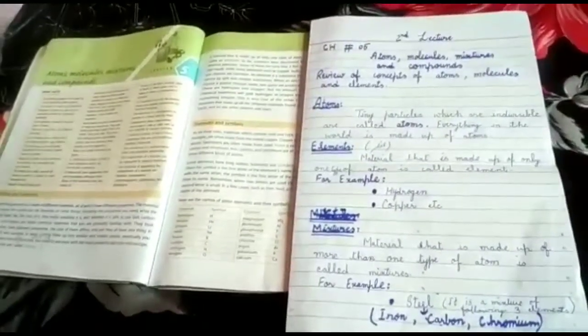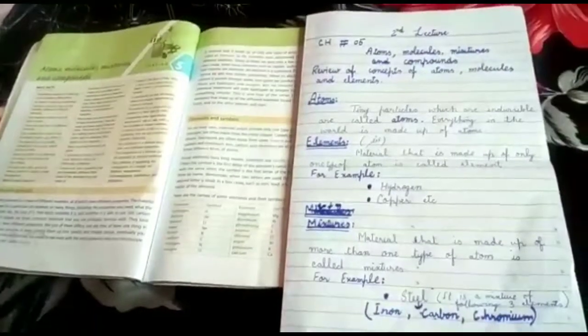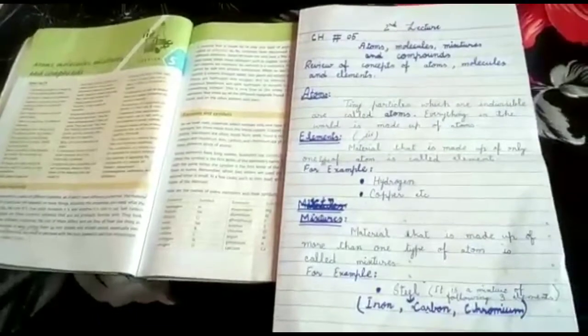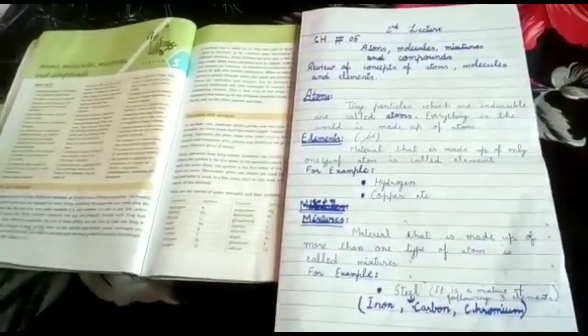Everything in the world, in your surrounding, is made up of atoms. Next is element - its Urdu meaning is ansar. Material that is made up of only one type of atom is called element.